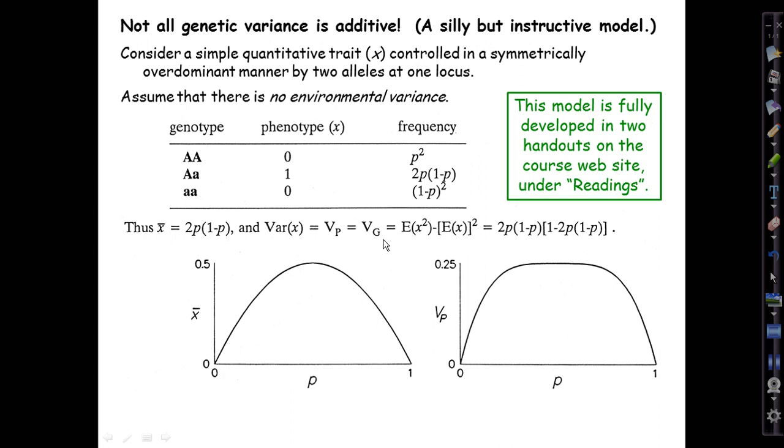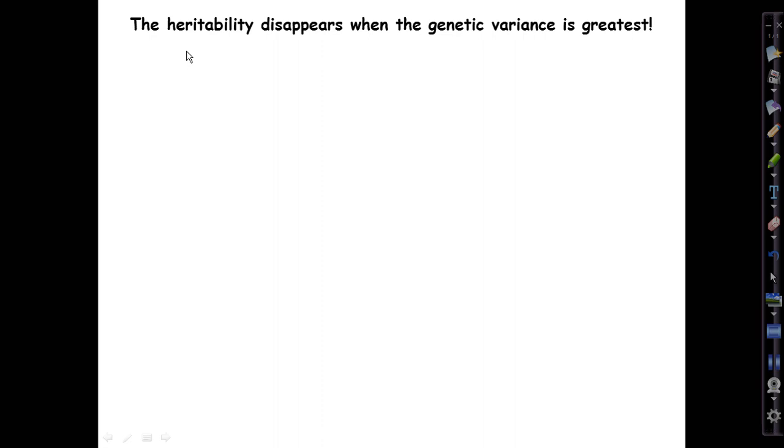Here's what it turns out to be after a bit of algebra: 2pq times 1 minus 2pq. This is a very abbreviated presentation of the model; it's more fully developed in two handouts that are PDFs served from the course website in the readings section. What happens if we select for higher values of X?